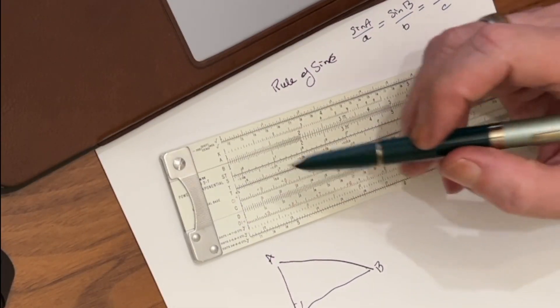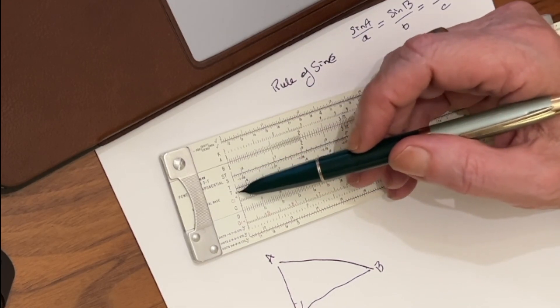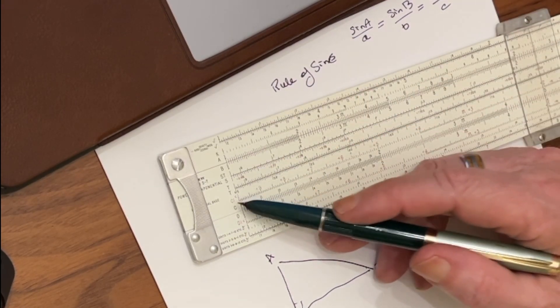To do that, we're going to go to the trigonometric side of the slide rule, and we're going to look to the tangent scales, which are labeled with a T. One tip of the trade is when you're using a slide rule and you want to look at tangents, you always want to look between 5.7 degrees and 45 degrees. You don't want to look at angles that are greater than 45 degrees. So you want the larger of the two sides on the bottom. And that's how you decide which angle you're going to use, and that's why I'm looking for angle B here.